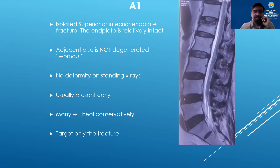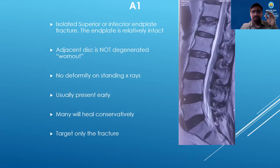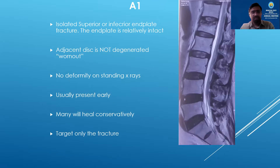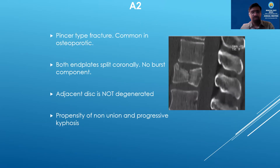The A1 fractures are isolated superior or inferior end plate fractures, most commonly superior ones. The adjacent disc is usually quite okay. There is no deformity on standing x-rays. They present quite early and many of them will actually heal conservatively. If you have to do a vertebroplasty, a targeted vertebroplasty at the fracture end is going to give you good results.